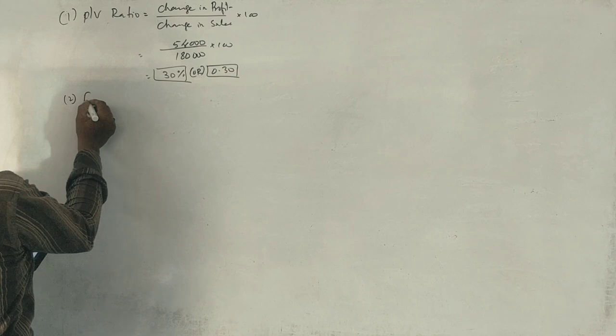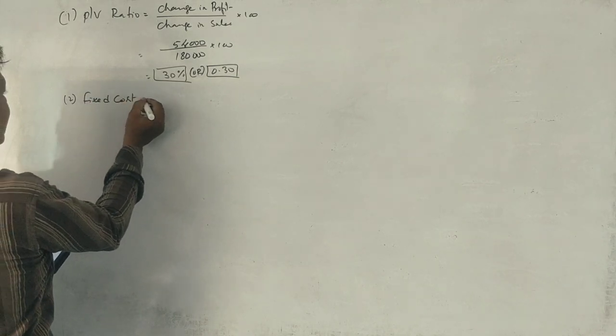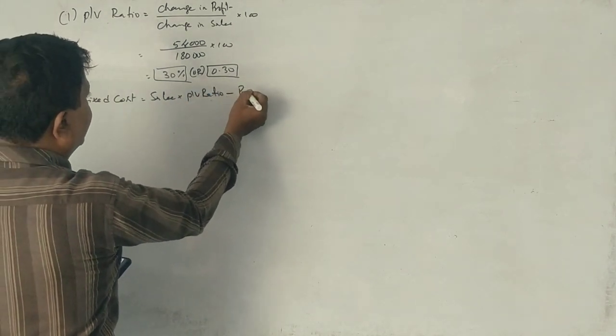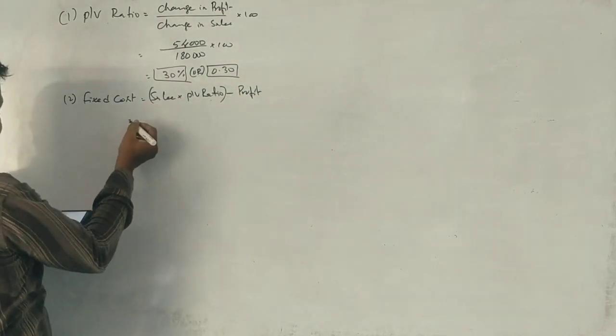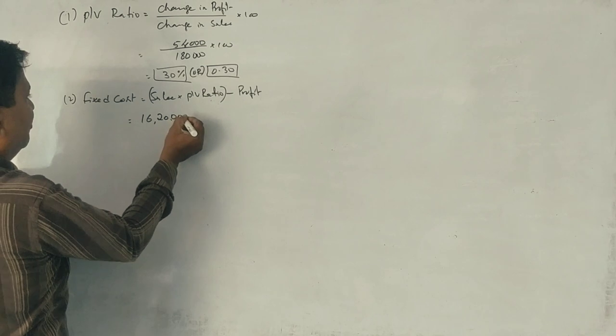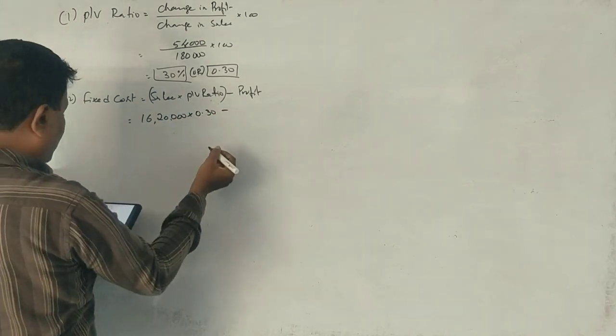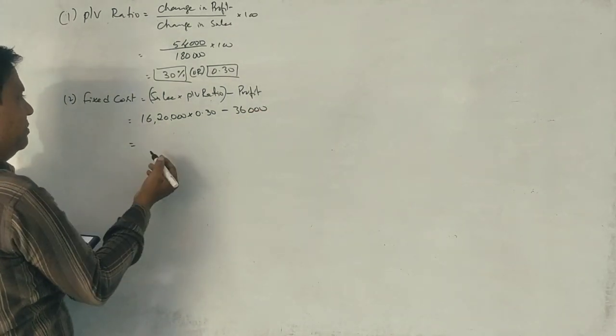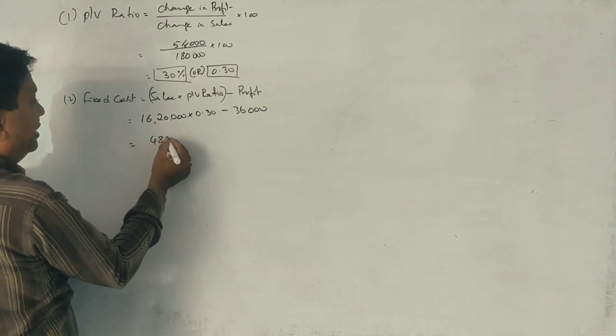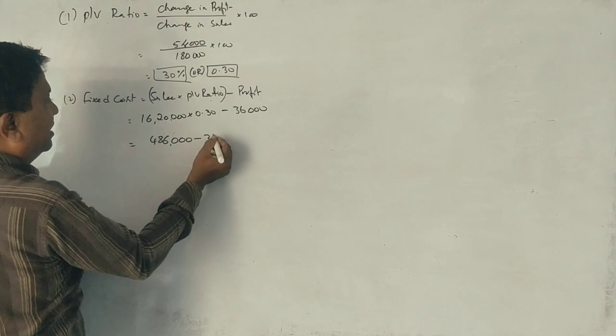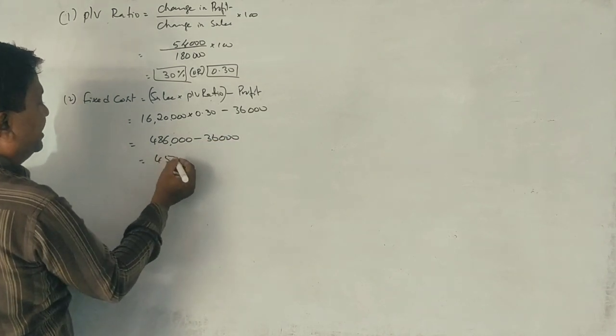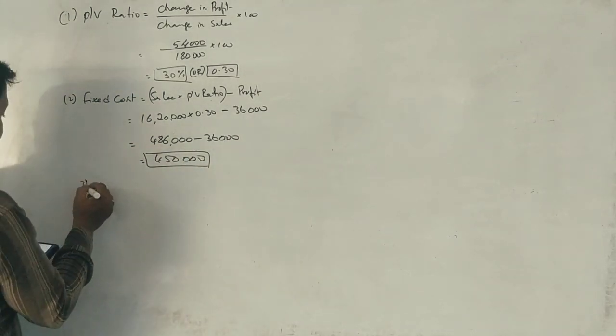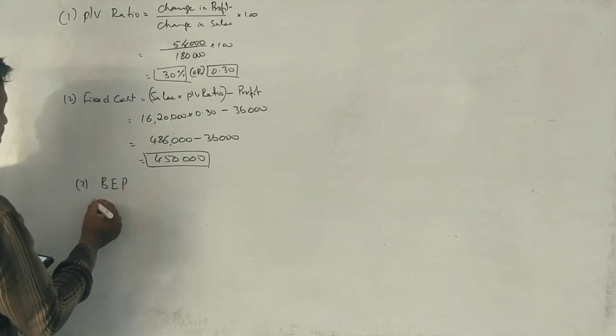Now what is the fixed cost? Fixed cost equals sales into P/V ratio minus profit. Sales 16,20,000 into 0.30 is 4,86,000. Minus profit 36,000. Fixed cost is 4,50,000.